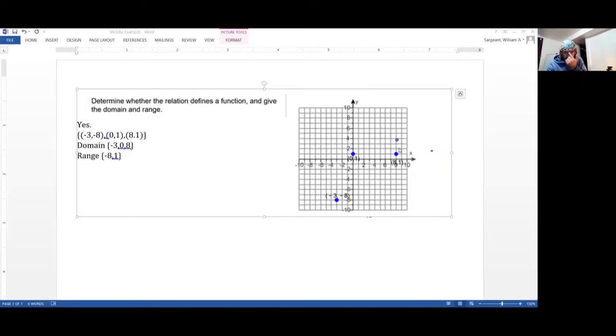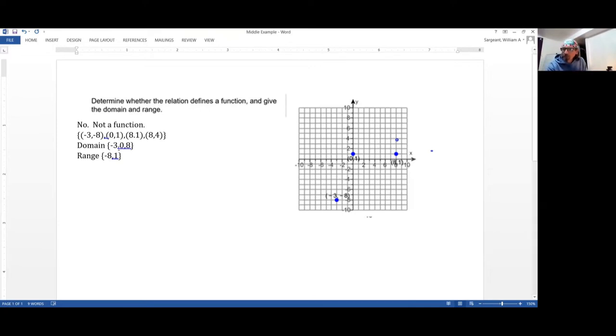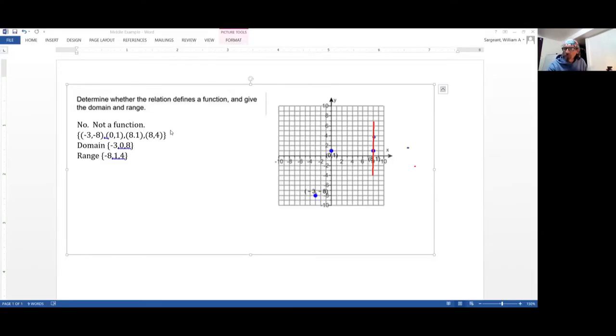If, however, I had a particular fourth point, in this case right here, then it would change this to not being a function because we see the point 8, 4 as well. And X is now going to two different values of Y, 1 and 4. This doesn't change our domain, but it changes our range. And there's a particular way that we could tell that this is not a function when we look at this graphically. And specifically what that is, is that when we have two of the same X coordinate, we can connect those by a vertical line.